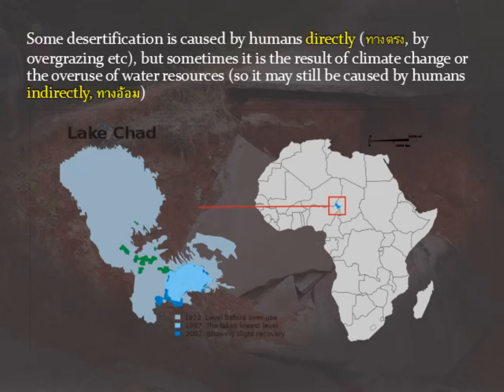By 2007 there is slight recovery in the water levels, but it is still hugely below its original level before it was overused. So there we've looked at a few of the key parts of land pollution — there are many other aspects of the subject and many other ways that we can pollute the land.